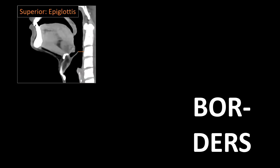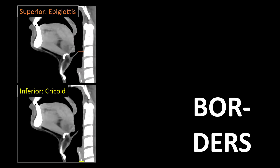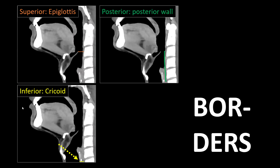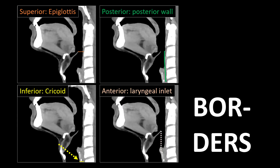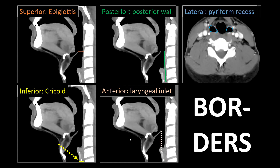We're going to discuss the hypopharynx separately from laryngeal anatomy. Let's start with defining the borders of the hypopharynx. The superior border is the tip of the epiglottis, which belongs to the larynx. The inferior border is the inferior surface of the cricoid cartilage, located quite inferiorly on the image. The posterior border is formed by the posterior hypopharyngeal wall, and the anterior border is formed by the laryngeal inlet — the opening from the hypopharynx to the larynx.